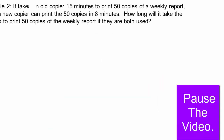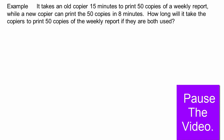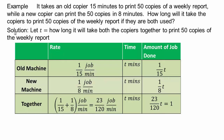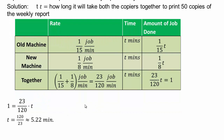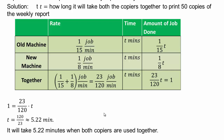Let t equal how long it takes both copiers to print 50 copies of the weekly report. One copier takes 15 minutes to print 50 copies, so its rate is 1 job per 15 minutes. The other machine's rate is 1/8 job per minute. Multiply rate times time for each, add them together, and set equal to 1 complete job. Solving for t gives approximately 5.22 minutes — that's how long it takes using both machines together.